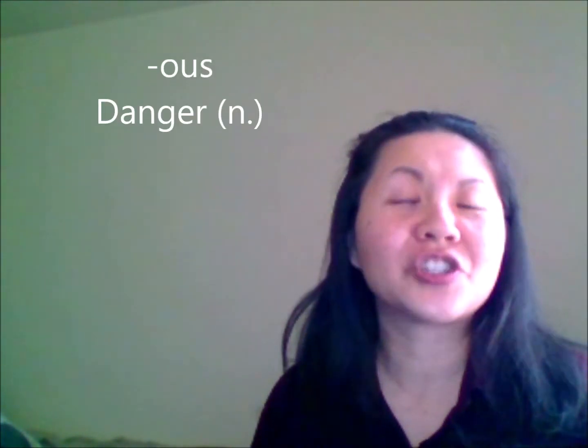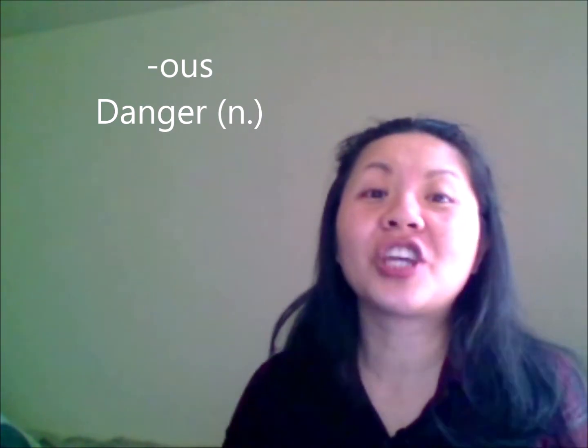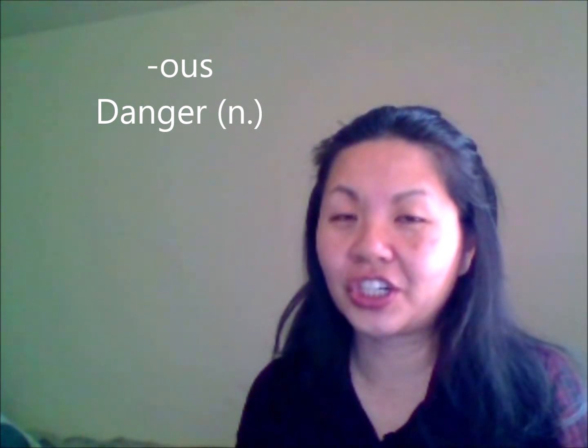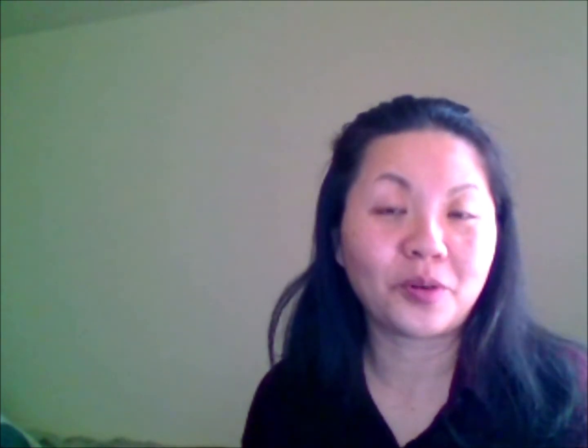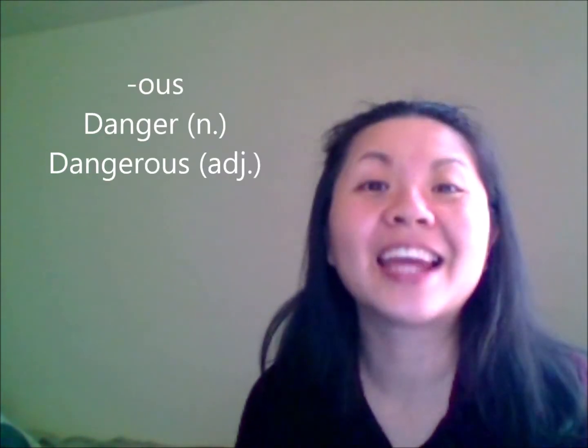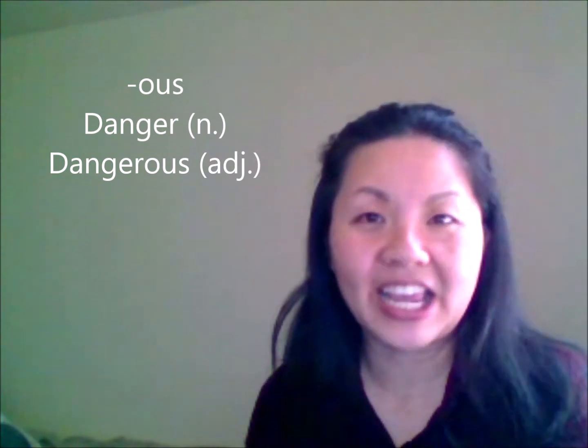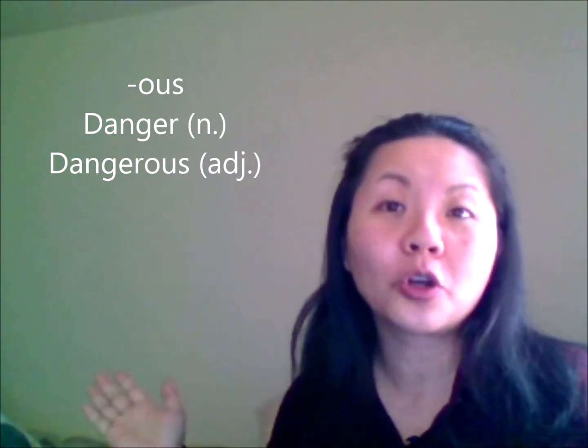I'm going to give you a suffix and a word — this word might be a verb or a noun — and I'd like you to try and change it into an adjective. Let's start with "danger." She's in danger. Now let's change this word to an adjective by adding O-U-S. The word would be "dangerous." It is dangerous. So by adding O-U-S to danger, we get the adjective: dangerous.